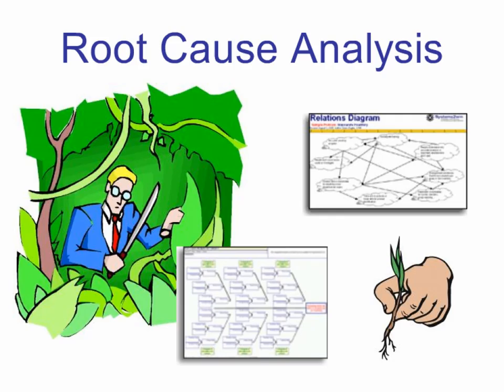The Ishikawa Root Cause Analysis Fishbone Diagram is an immensely powerful tool to identify root problems and stimulate ideas for solving them. The primary shortcoming of Lean and Kaizen methods is that people rush into solving problems before they have adequately defined the problems and, as a result, end up hacking away at the leaves rather than at the roots. And as any gardener knows, sometimes pruning a bush just makes it come back even thicker and stronger than it was before you pruned it back.